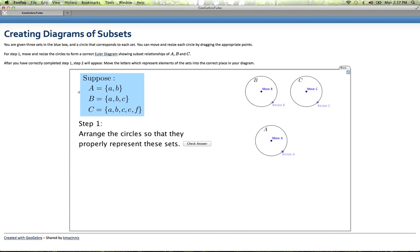So the first thing that I want to notice, since we're looking for subset relationships specifically, is that everything that's in A, the set capital A, consists of the elements lowercase a and lowercase b, is also in the set B.